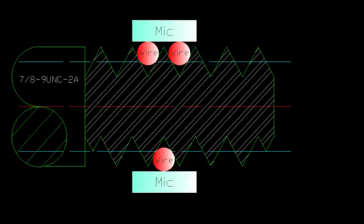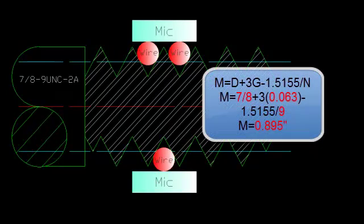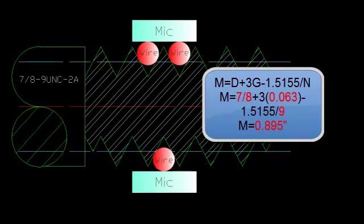The formula to check this measurement is M equals D plus 3G minus 1.5155 divided by the number of threads per inch. M is the measurement over the wire. D is the nominal diameter of the thread, in this case 7/8 of an inch plus 3G. G is the actual wire we're using, in this case 63 thou minus 1.5155 divided by N, which is the number of threads per inch, in this case 9 threads per inch. If we do this calculation, it rounds to three decimal places to 0.895 inches.